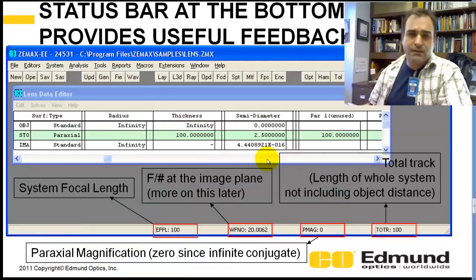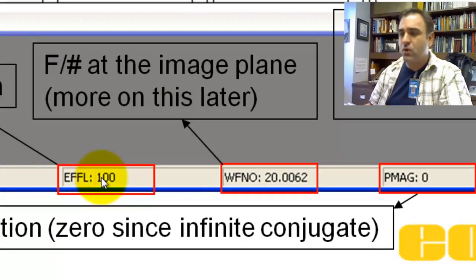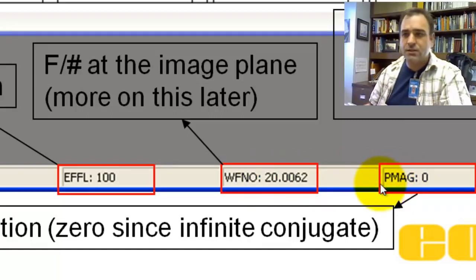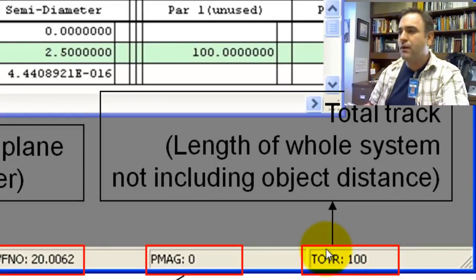And finally, this is the last slide I'm going over today — your status bar at the bottom. These are the defaults: your focal length, your system focal length, your working F-number (we'll be talking about F-number and working F-number a little later), magnification (that's really PMag, paraxial magnification — it's got an infinite conjugate so your magnification is zero), and your total track, which is the length of the whole system, not including the object distance.